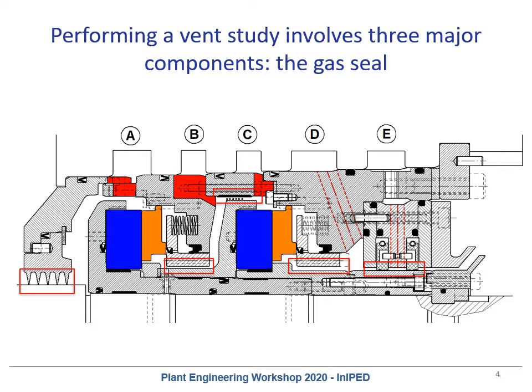As the seal manufacturer, I'm going to start with the seal. I'm showing a diagram of a dry gas seal and highlighting all of the various restrictions that exist within the seal that aren't the dry gas seal itself. For most vent studies, you assume that in whichever failure condition you're modeling, the mating ring and primary ring have just vanished — they've disintegrated — and the only restrictions remaining are those I've highlighted.